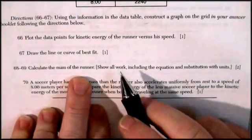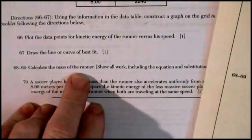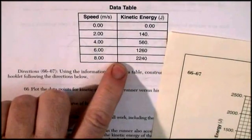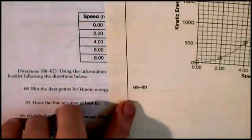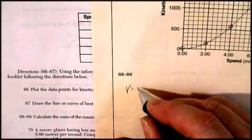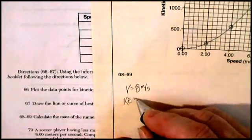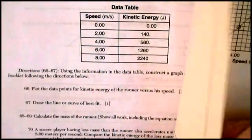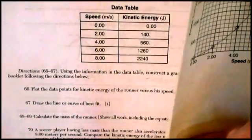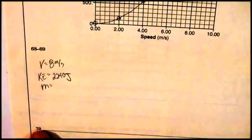What's the next thing they want? Calculate the mass of the runner. Show all work including the equation substitution with unit. Well, I'm going to pick some data here. I'm going to pick a velocity and a kinetic energy. And I like to go with the largest number. So I'm going to pick a velocity of 8 meters per second. Velocity is 8 meters per second. And at that point, the kinetic energy was equal to 2240 joules. They want us to find the mass of the runner. So that's information, that's listed in my notes.